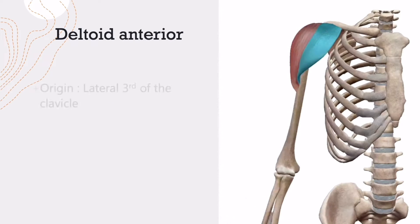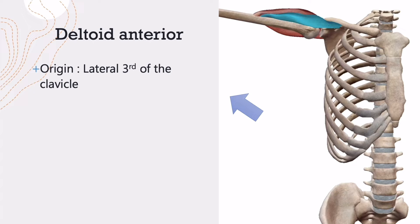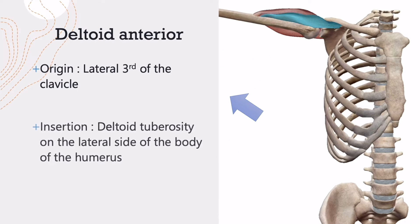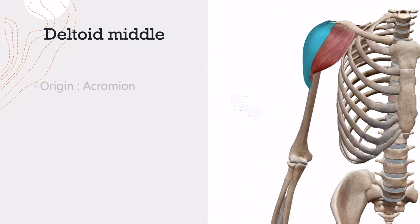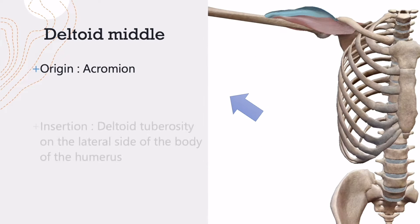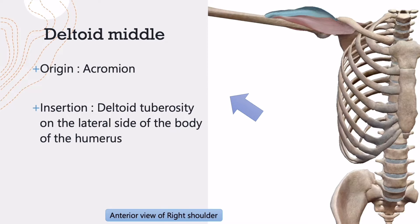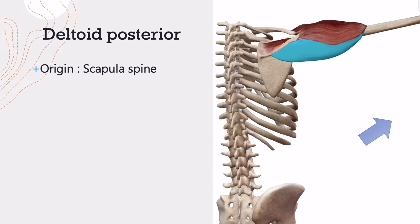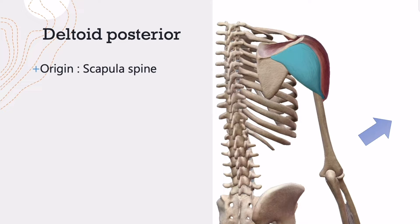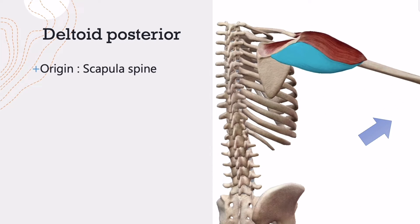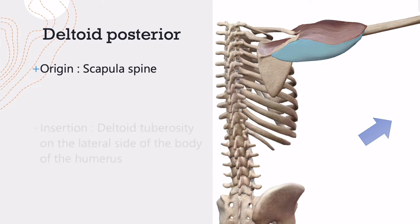Deltoid anterior originates from the lateral third of the clavicle. Deltoid middle originates from the acromion. Deltoid posterior originates from the scapula spine, and all three of these muscles insert at the same place: the deltoid tuberosity of the lateral side of the body of the humerus.